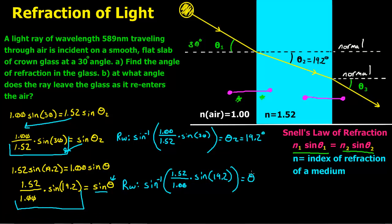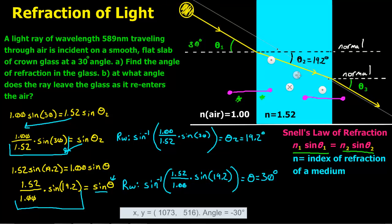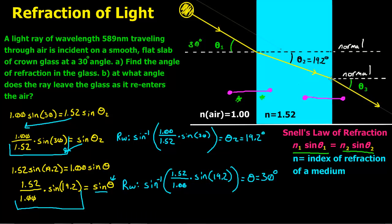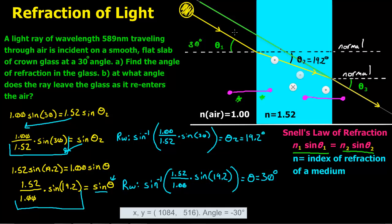So theta 3 equals 30 degrees. You can probably tell that 30 degrees is the same angle we had when we started — the ray is at the same angle before entering the crown glass as it is when it leaves. And just to show you, this is drawn to scale: if I take my ruler and align it with the incoming ray, you'll notice it is parallel to the outgoing ray — that is 30 degrees. Hope that helped.